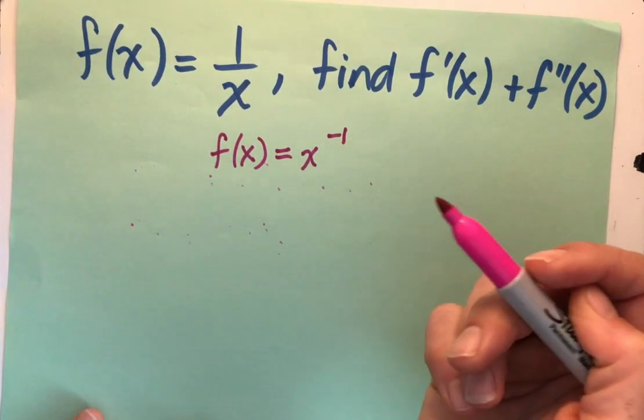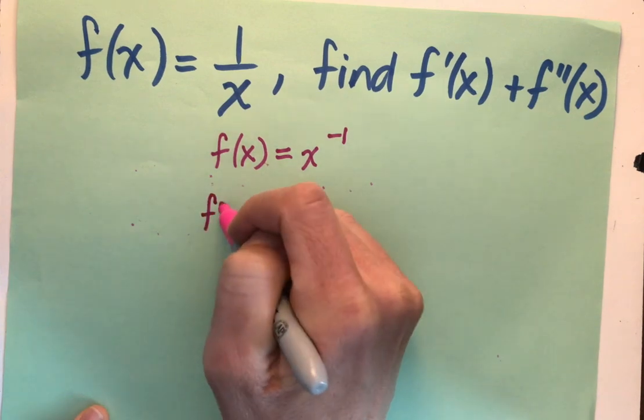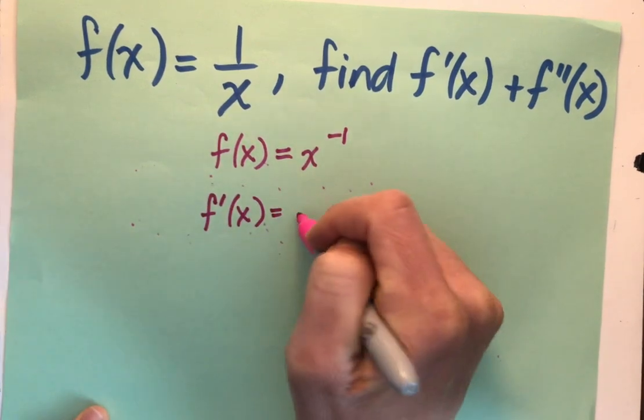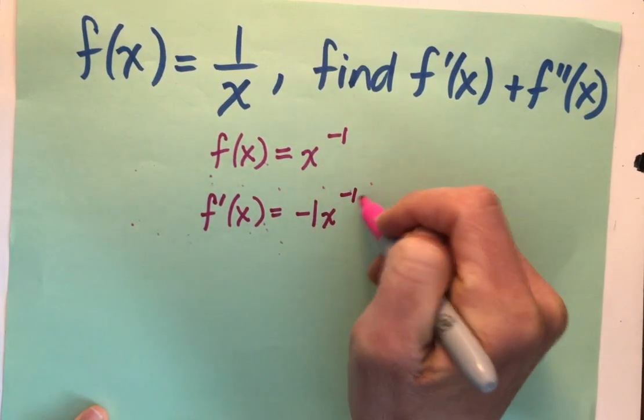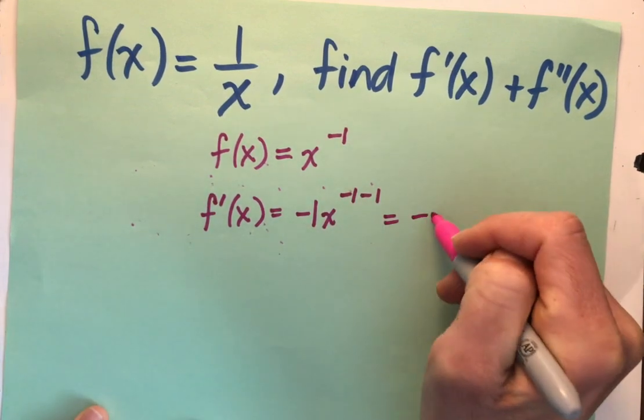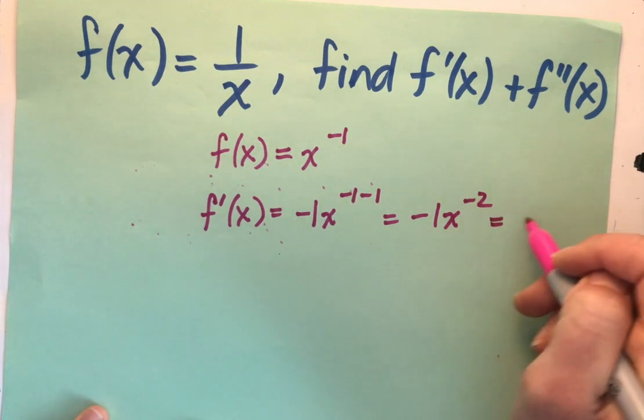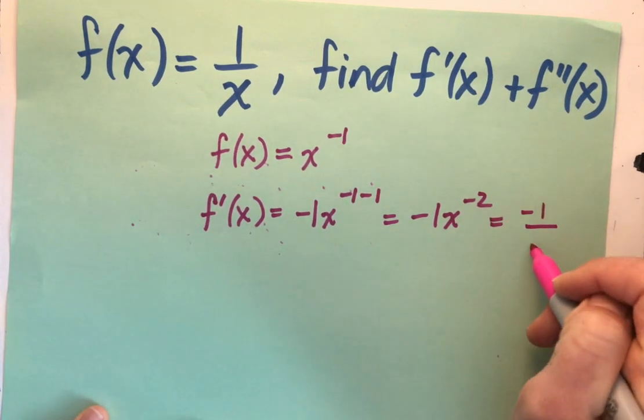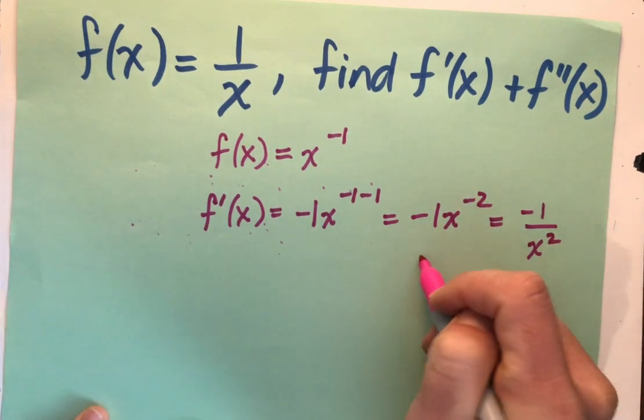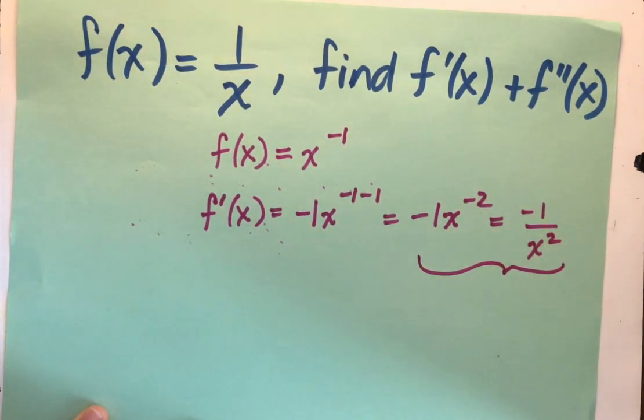Now I'm going to follow my shortcut rule. I'm going to write this out. f prime of x will be negative 1 x to the negative 1 minus 1, which is negative 1 x to the negative 2. No one likes negative exponents, so I'm going to rewrite that as negative 1 over x squared. These two things are my first derivative in just the two different forms.